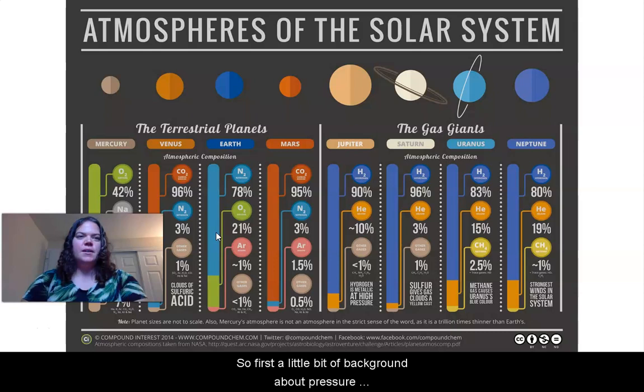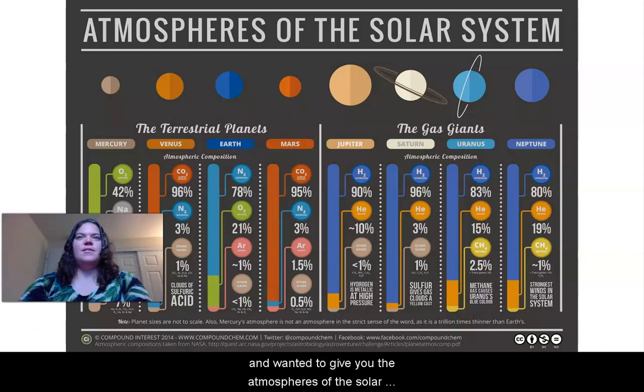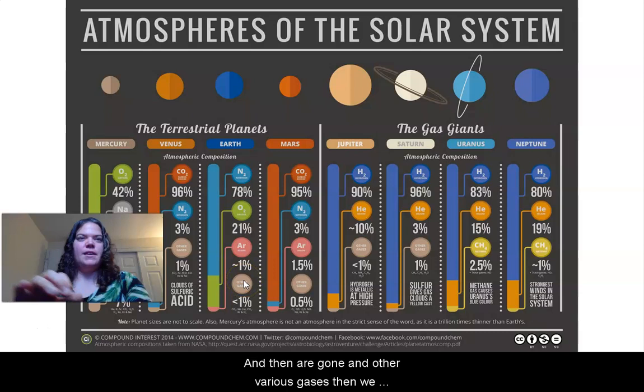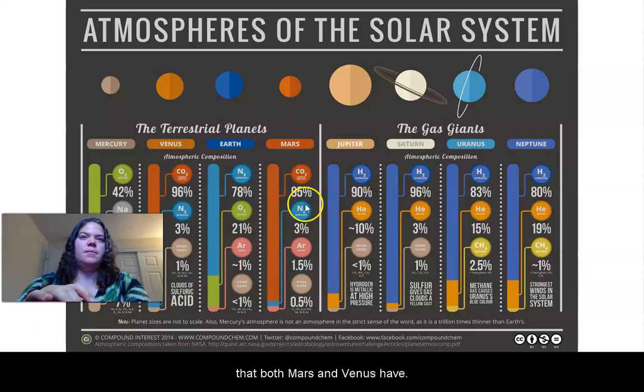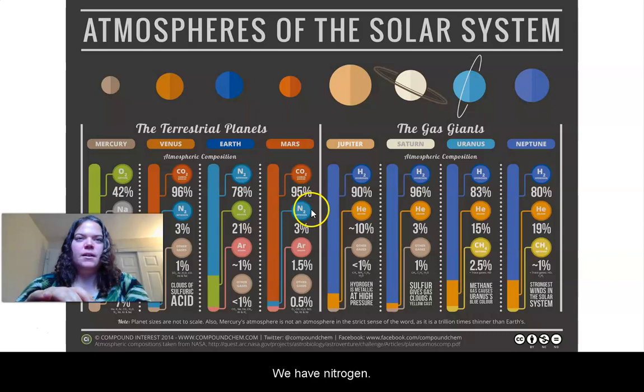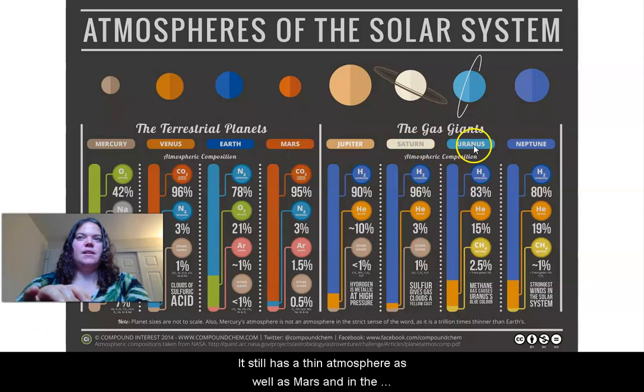I wanted to give you the atmospheres of the solar system. So here's Earth in the middle, and our atmosphere composition is mostly nitrogen, which is the blue component here. Then we have oxygen, which is 21%, and then argon and other various gases. Now when we compare to the other planets in the solar system, you see that both Mars and Venus have a large component of CO2, which is carbon dioxide.